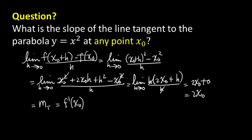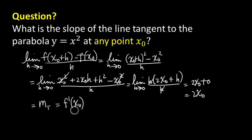If x₀ is 1, then it's 2 times 1. It's like a function in itself because you can plug in any value for x₀ and get the slope of the line tangent to the curve at any point on the parabola. You can think of it as a working slope formula. The next section will look at derivatives of a function — think of a derivative as a function in itself. That'll be for section 3.2. This concludes section 3.1.